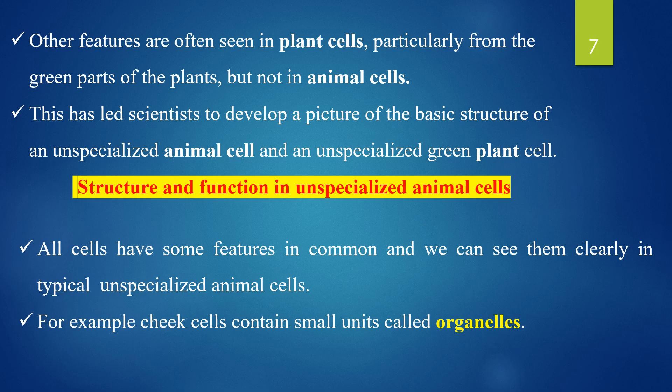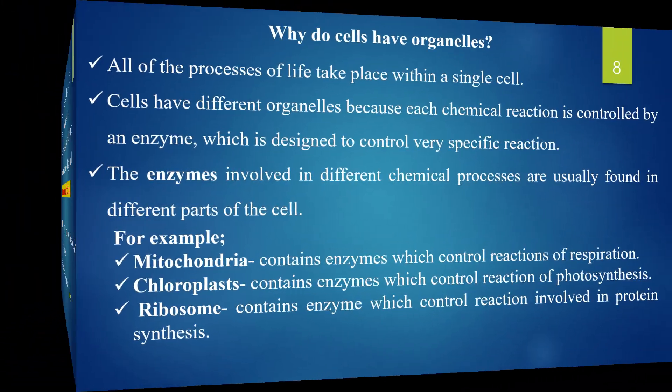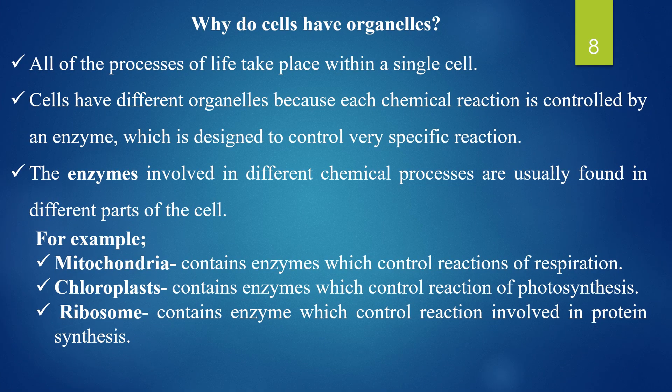An organelle is the subunit of cells. Why do cells have organelles? All of the processes of life take place within a single cell. Cells have different organelles because chemical reactions are controlled by enzymes. Each organelle is designed to control very specific reactions in the cell.